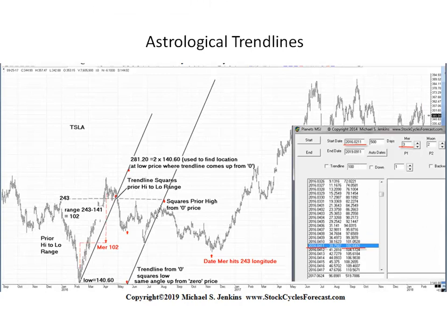Trend lines work well, but the best things are astrological trend lines — they're much easier to use. If we have a high of 243 and a low of 141, the range would be 102. Rather than drawing trend lines, all we have to do is move our planets the range — 102 degrees. Here's my little program: I punch in planet Mercury, starting with the origin date, and take the distance it's moved — it's moved 102 degrees right on to this date. Note that this date is the exact high. It has squared out, and by law we must change direction at that point. We don't have to wait for a trend line to break a week or two later — we know the uptrend is over and they have to be going down.